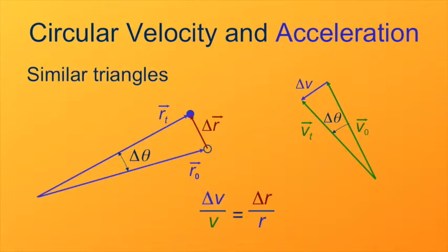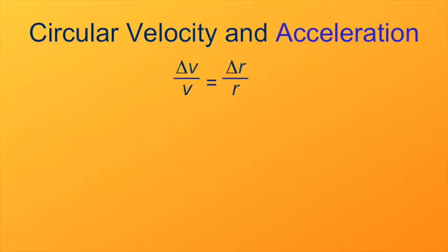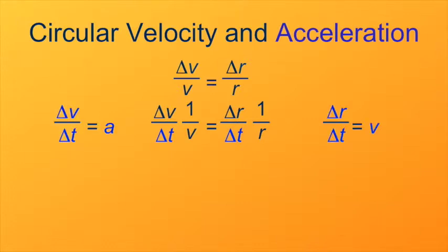We're going to use this equivalence to derive our formula for the actual magnitude of the centripetal acceleration. Delta v over v equals delta r over r. I divided both sides by delta t. But what is this now, delta v over delta t, that I've got on the left-hand side of the equation? Delta v over delta t is just the acceleration. And on the right-hand side of the equation, I have delta r over delta t. That's just the velocity.